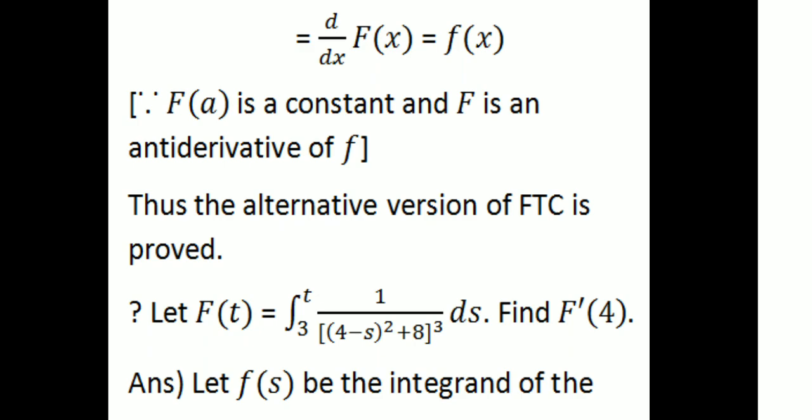Now, for the antiderivative function, we have d by dx of the integral from A to x of f of t dt equals f of x. There is a question: let capital F of t equal to the integral from 3 to t of 1 divided by (4 minus s squared plus 8) cubed ds. Find F dash of 4.